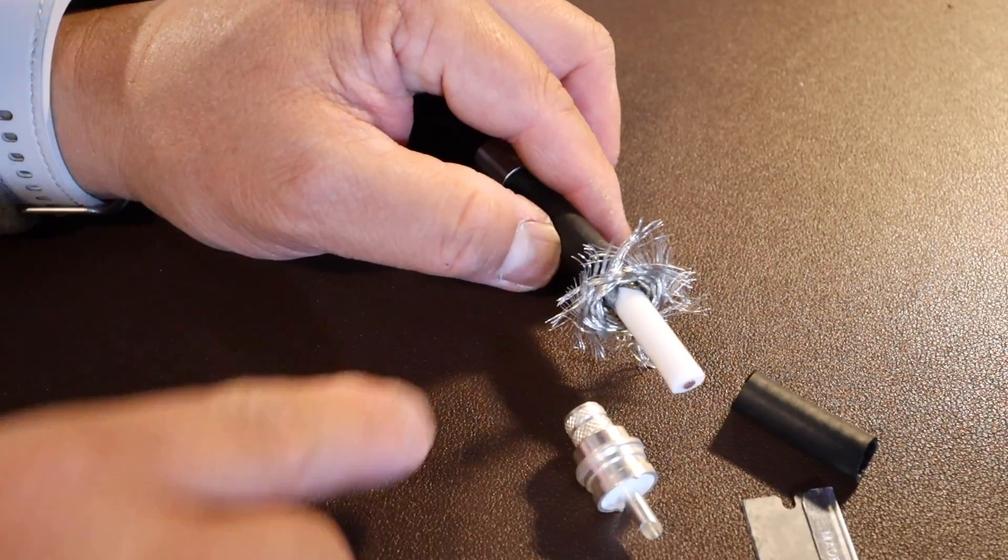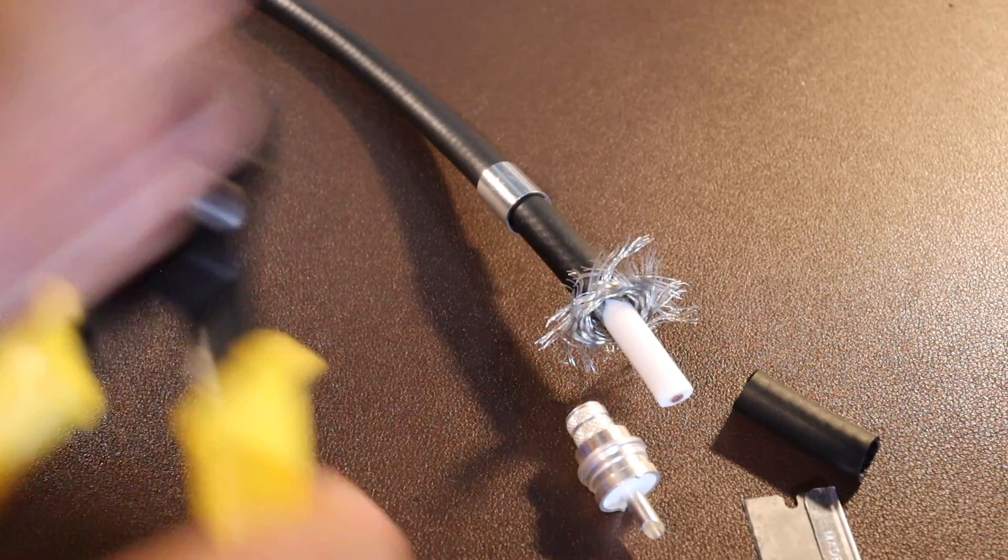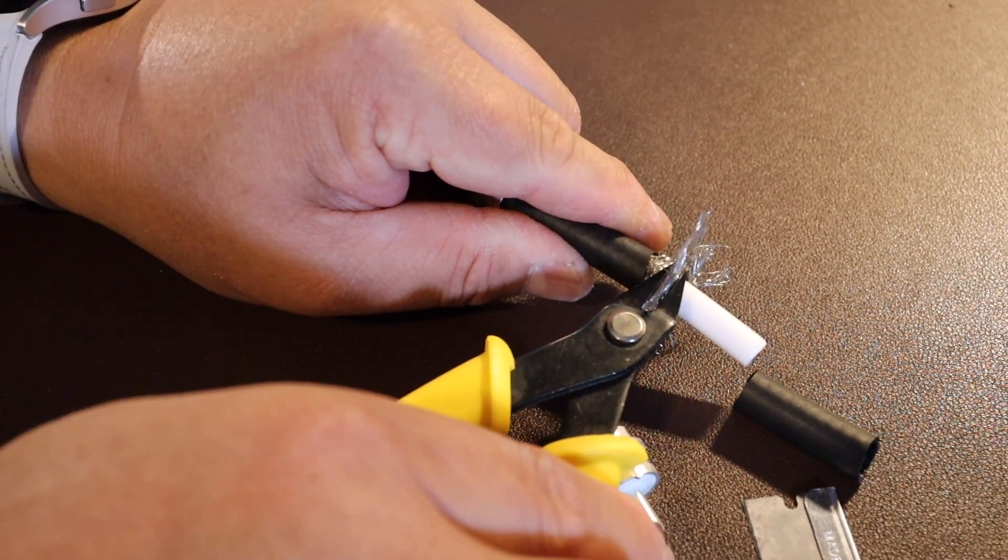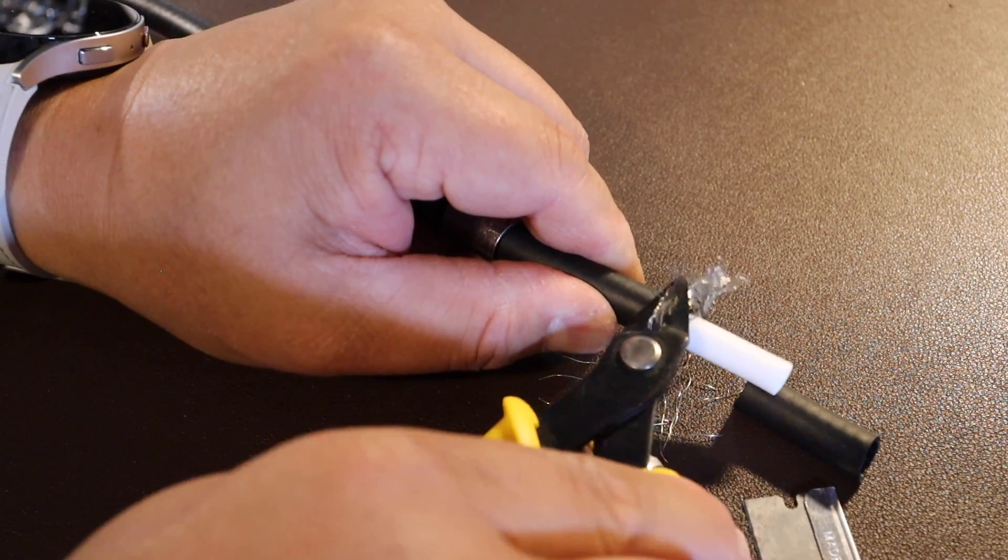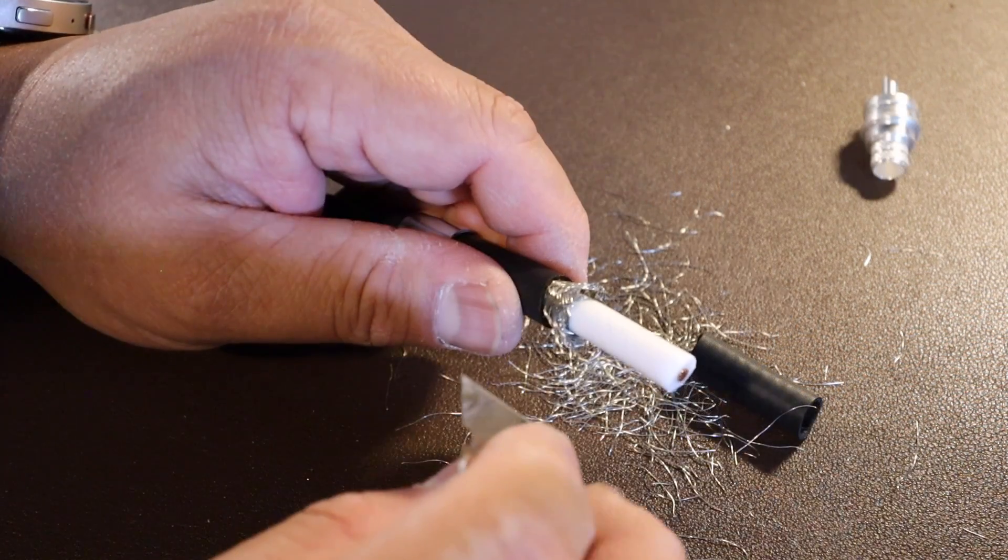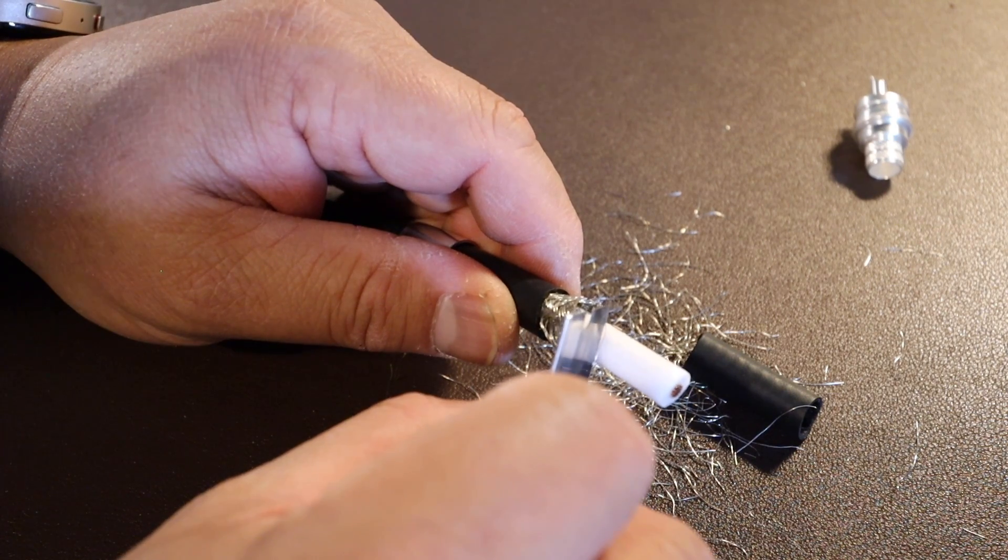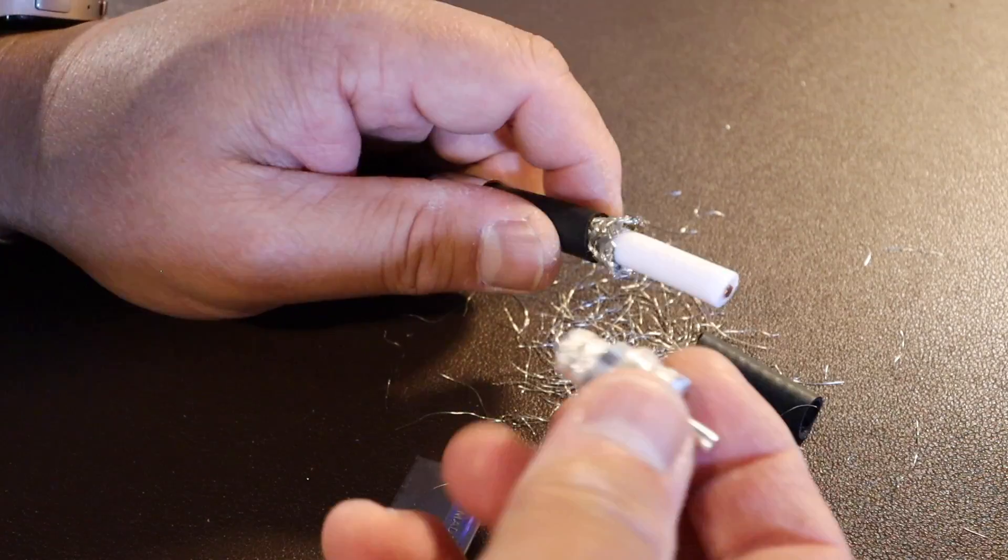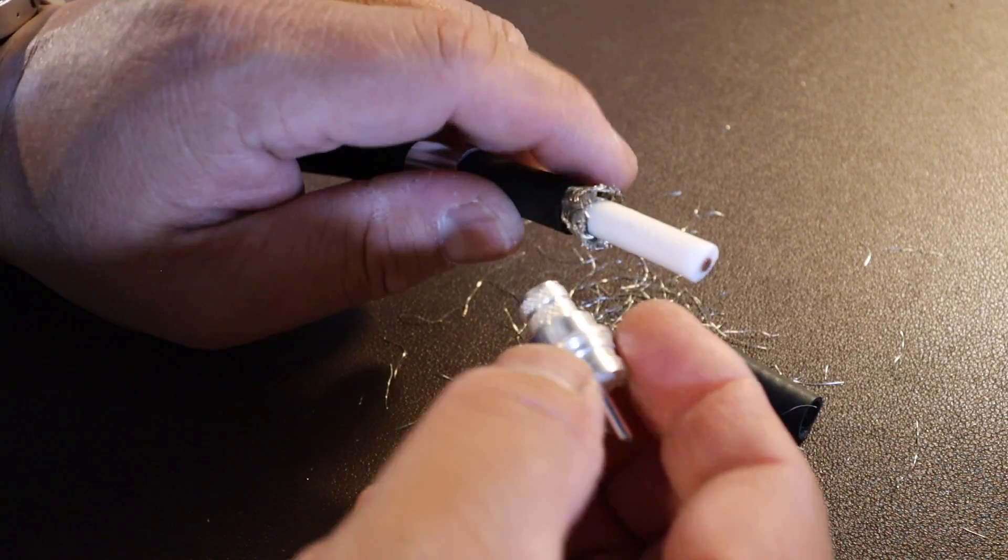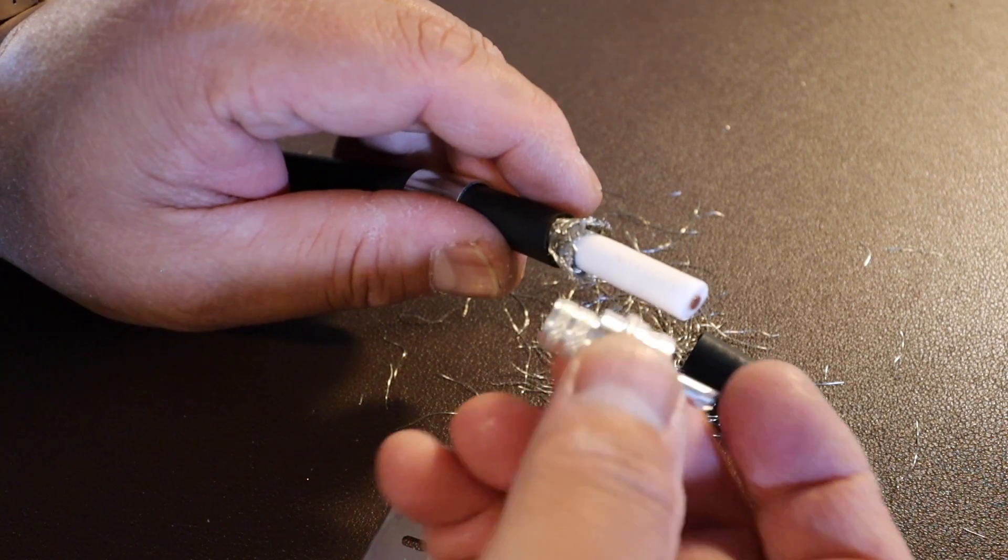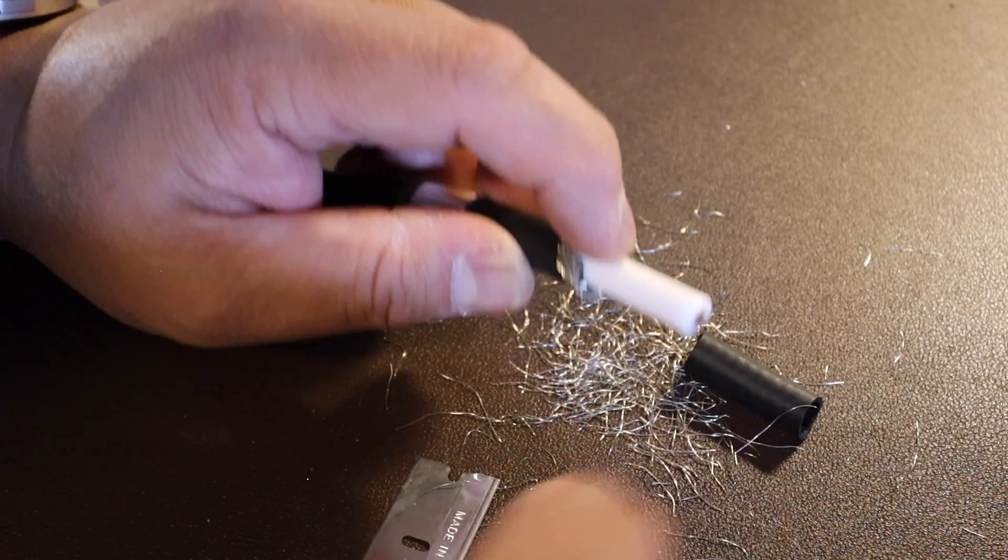Now I'm going to trim just some of this loose strands of shielding. I'm going to trim approximately about a half inch. So what I'm doing is I'm looking at where the center pin is located onto the connector. Just get an estimate length and just eyeball it. So it looks like I need to cut it right about here.